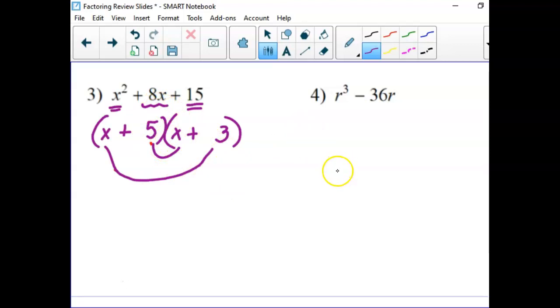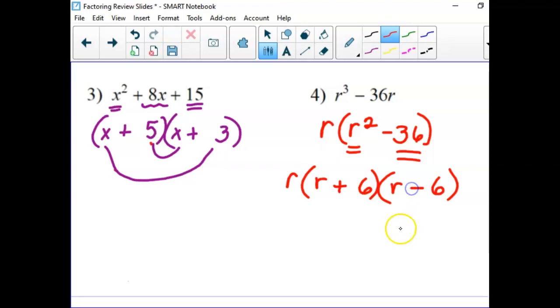All right, what could we do on number 4? First, factor out an R. Then what's left is R squared minus 36. These are both perfect squares, and it is the difference of perfect squares that can be factored. The sum of perfect squares cannot. The square root of R squared is R. The square root of 36 is 6. And then we need a positive and a negative, and the order doesn't matter. But this way, the middle terms cancel each other out. Plus 6R and minus 6R is 0 in the middle.